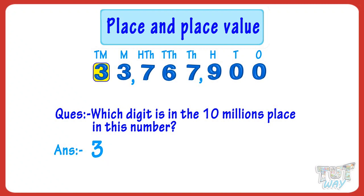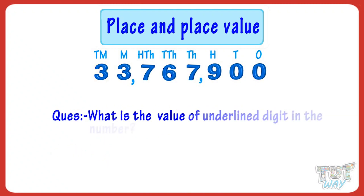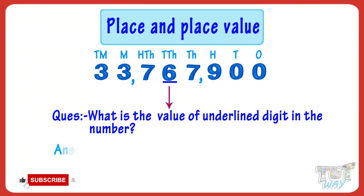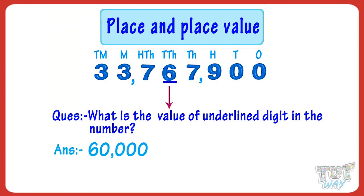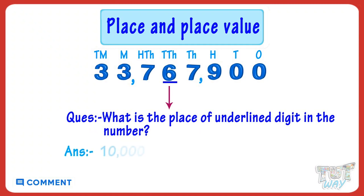Now, what is the value of the underlined digit in the number? The value of the underlined digit is sixty thousand. Now, what is the place of the underlined digit in this number? The place of the underlined digit is ten thousands.